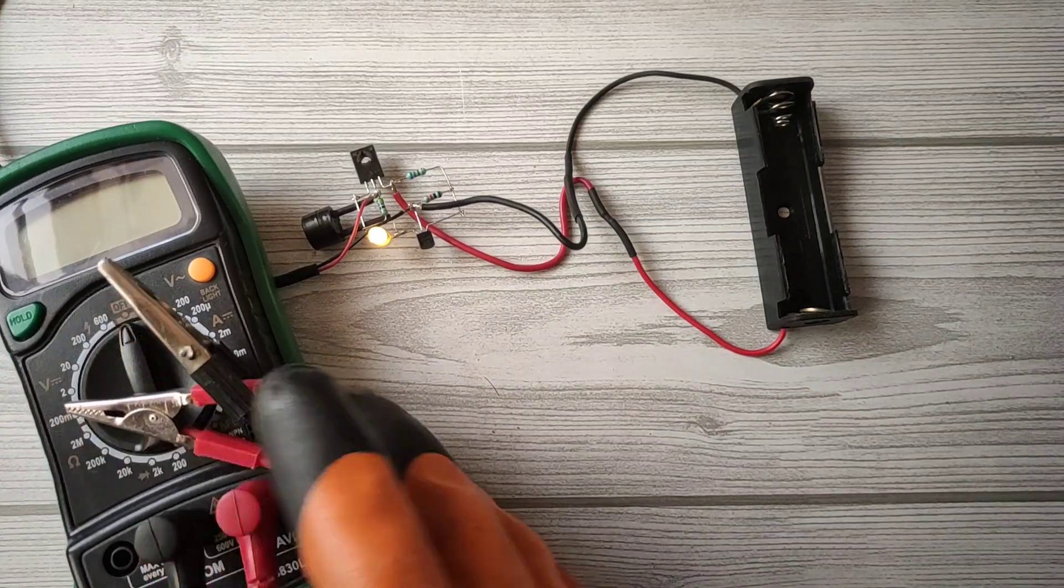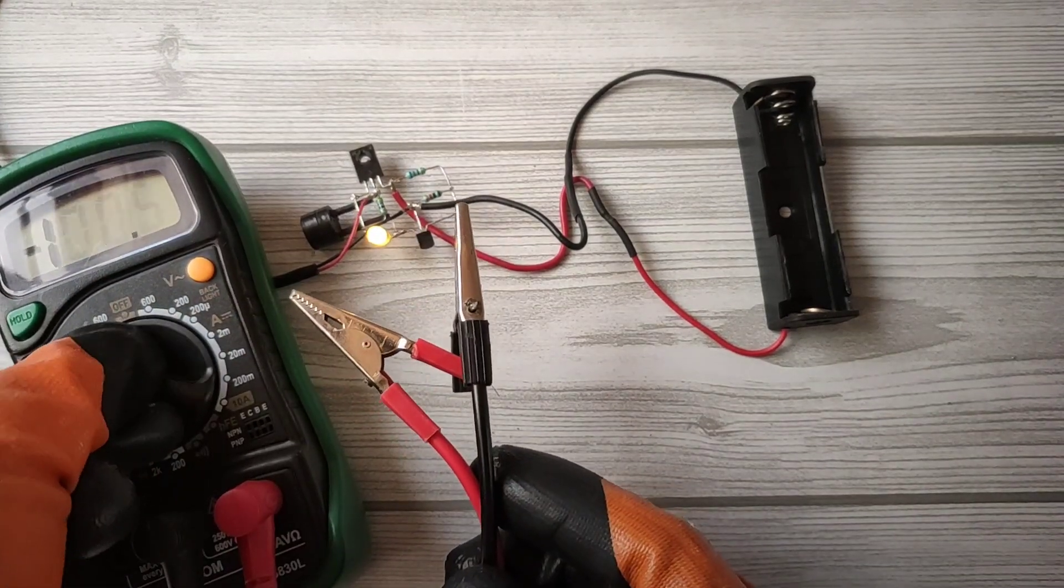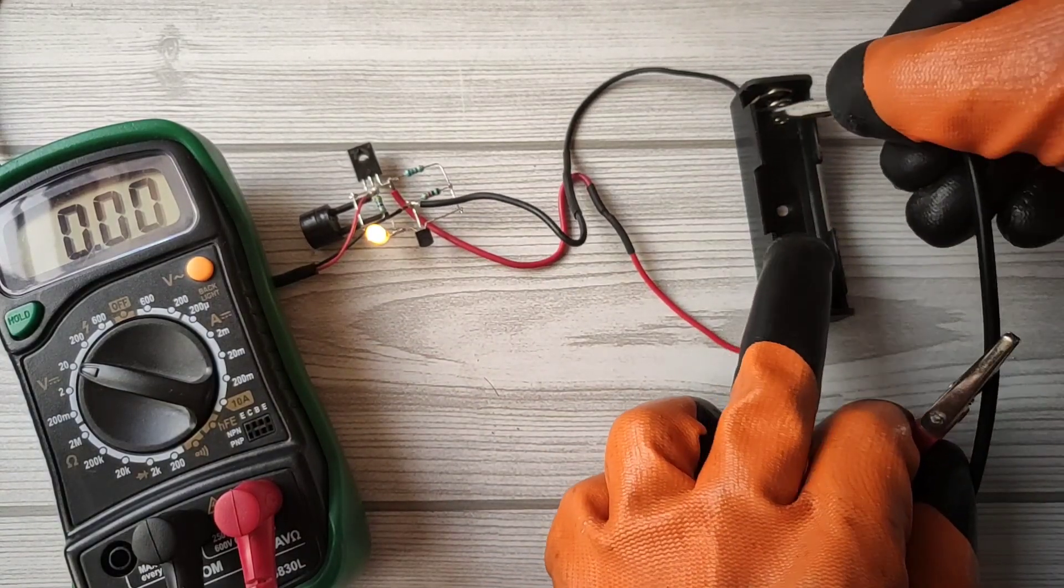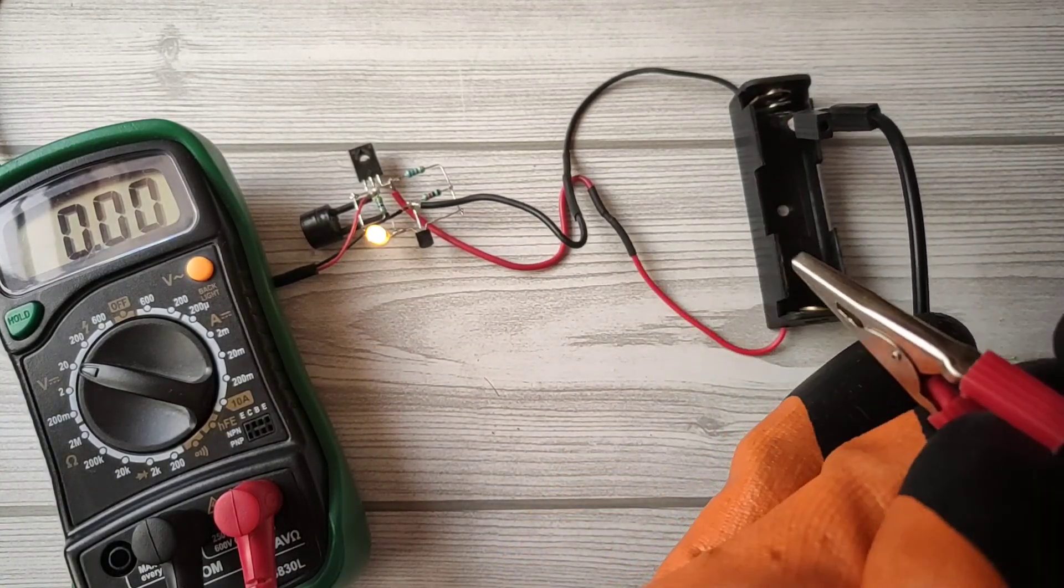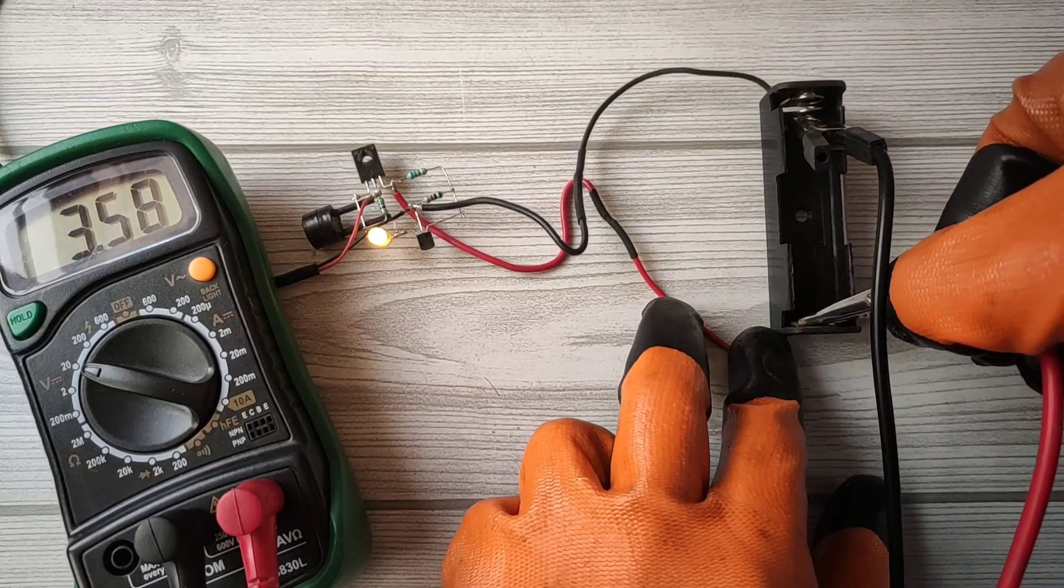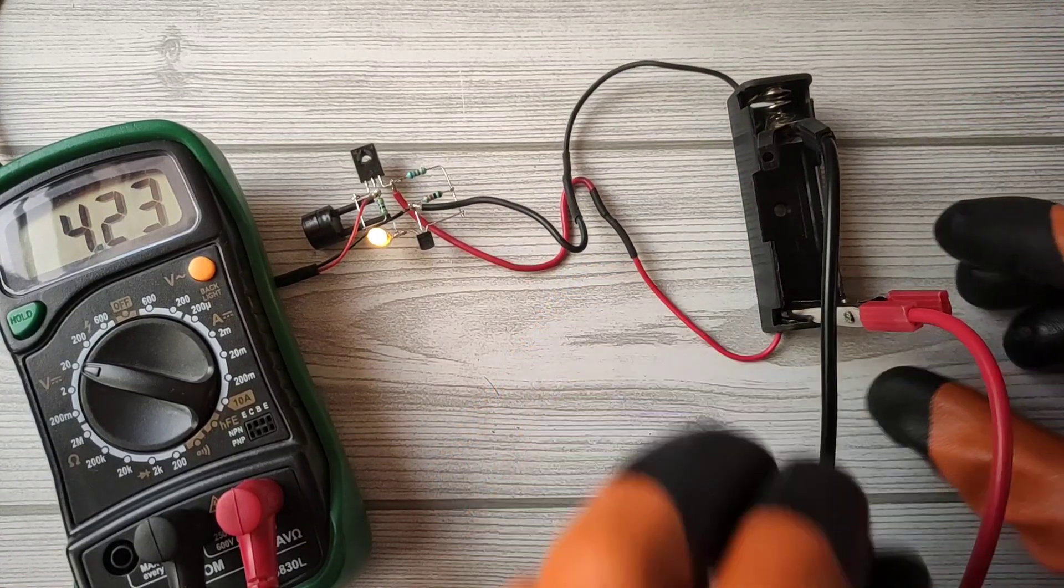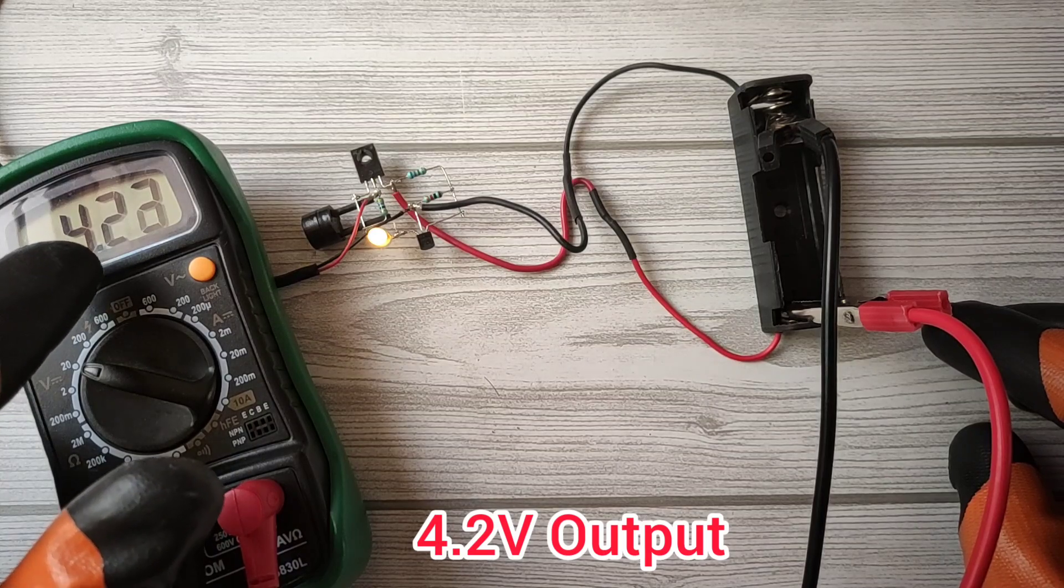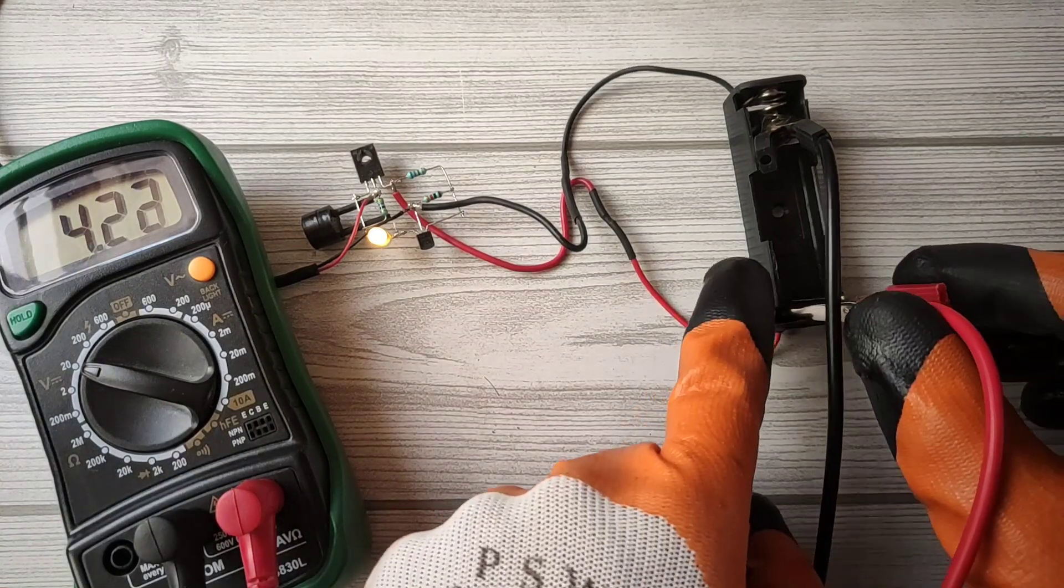Now I will connect a multimeter to show you the output voltage. You can see the output voltage is 4.2 volts as current and voltage is controlled by the shunt regulator.